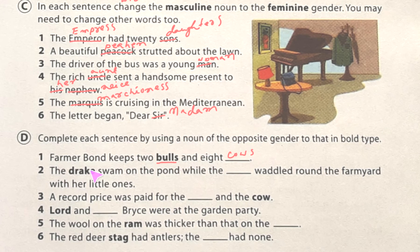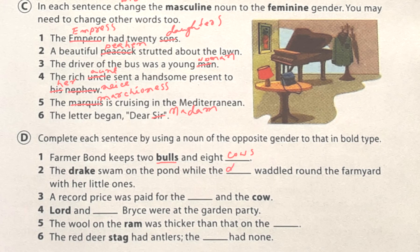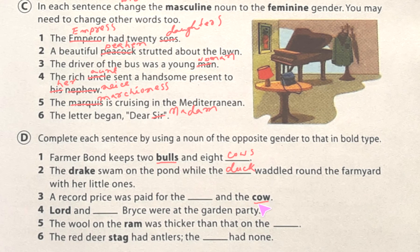'The drake swam on the pond while the ___ waddled round the farmyard with little ones.' Drake's opposite is duck. Next: 'A record price was paid for the ___ and the cow.' Cow's opposite is bull, so we write bull.